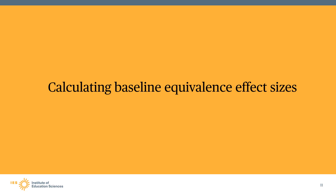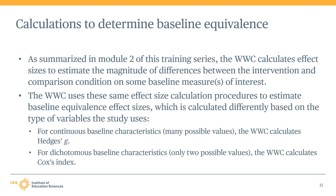Now that we have provided an overview of the baseline equivalence standard, let's briefly review how the WWC calculates baseline equivalence effect sizes. As discussed in earlier modules in this training series, the WWC calculates effect sizes to estimate the magnitude of differences between the intervention and comparison conditions on some baseline measures of interest. The WWC uses the same effect size calculation procedures to estimate baseline equivalence effect sizes as those used for estimating intervention impacts, but calculates effect sizes in different ways based on the type of variables the study used to measure characteristics.